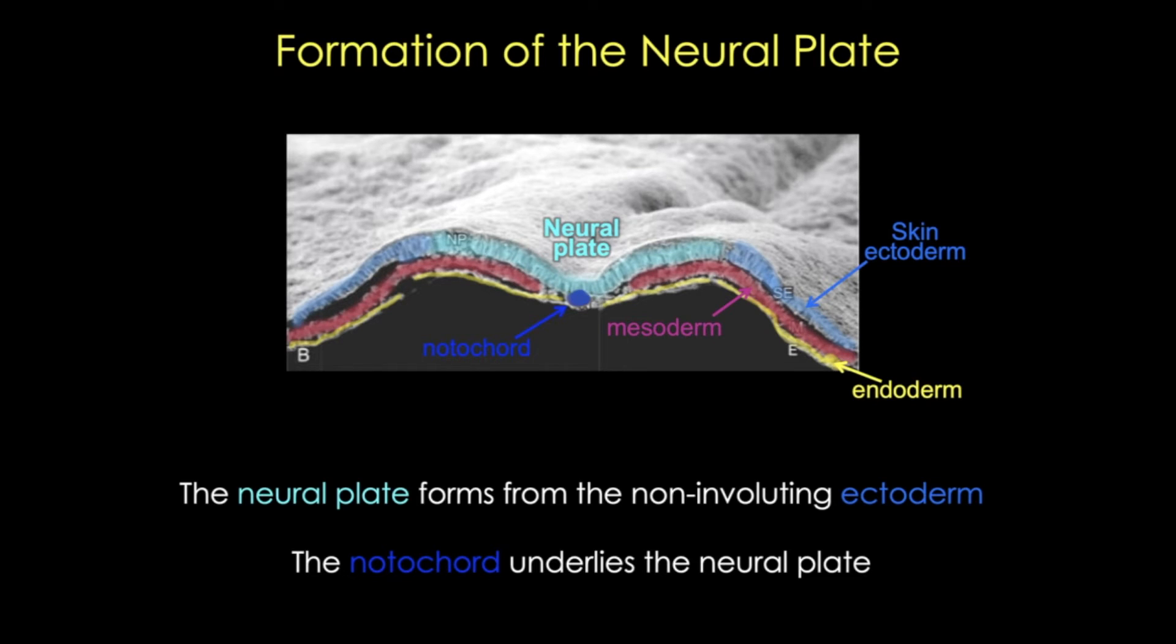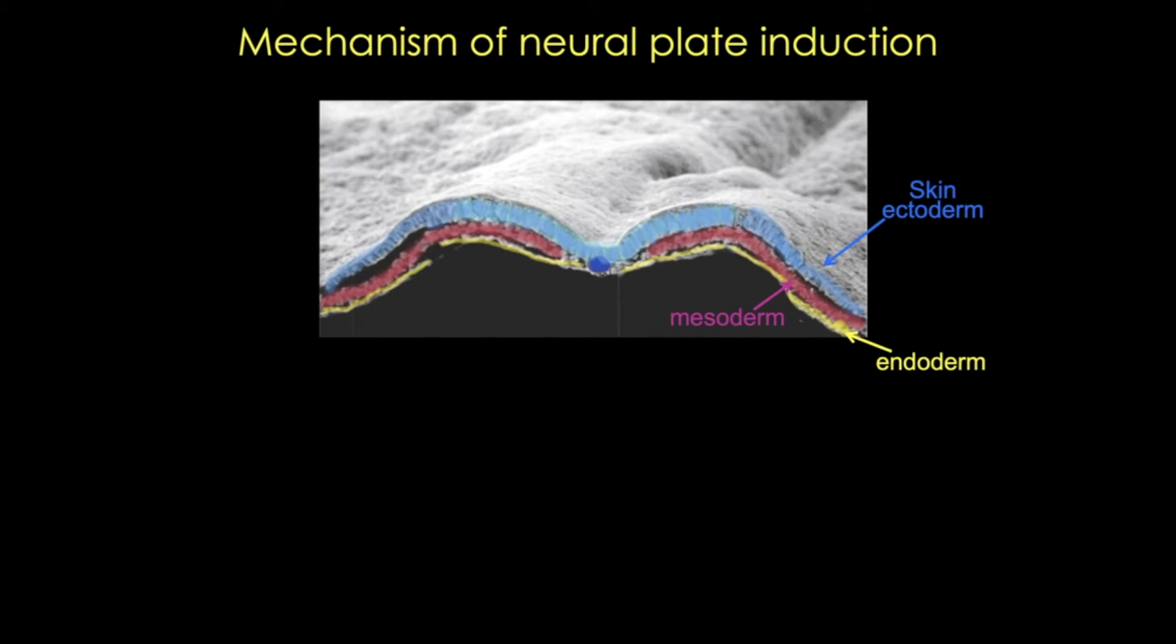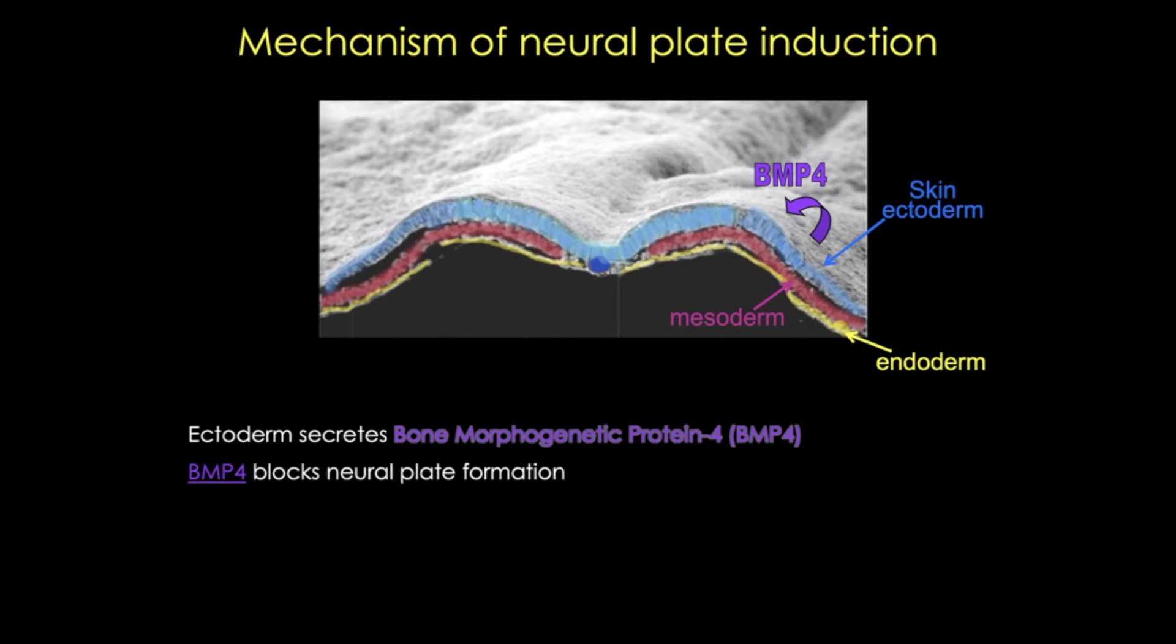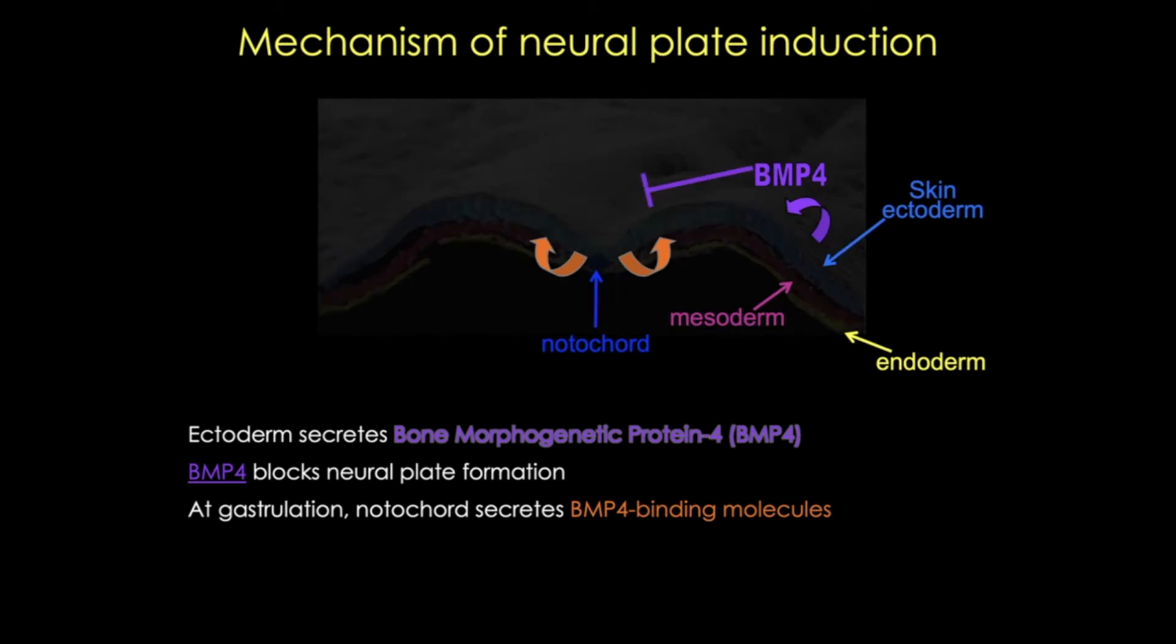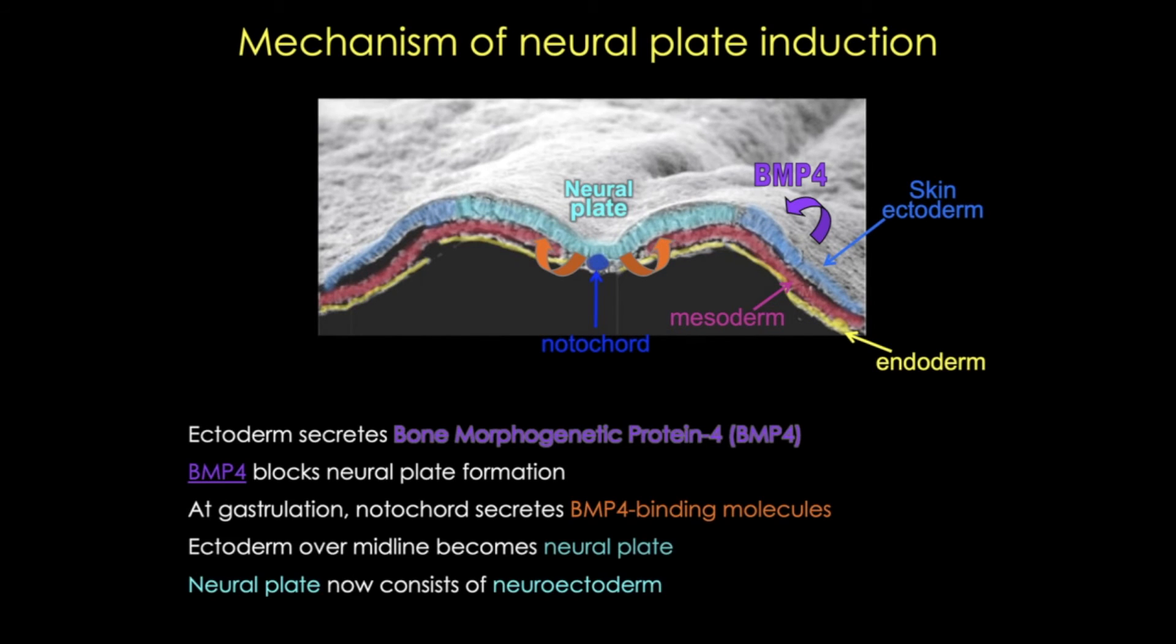What's different about that ectoderm? What actually directs those cells to become neuroectoderm and then to form the nervous system? Well, let's take a look. We know that the ectoderm shown here in darker blue secretes a protein called bone morphogenetic protein 4, or BMP4. BMP4 binds to receptors in the ectoderm. In doing so, it actually prevents formation of the neural plate. However, at gastrulation, the notochord begins to secrete BMP4 binding molecules. Essentially, these molecules bind up BMP in that ectoderm right over the notochord. This area has low BMP signaling, which means different molecular pathways are activated in that ectoderm, allowing those cells to differentiate as neuroectoderm and become the neural plate.